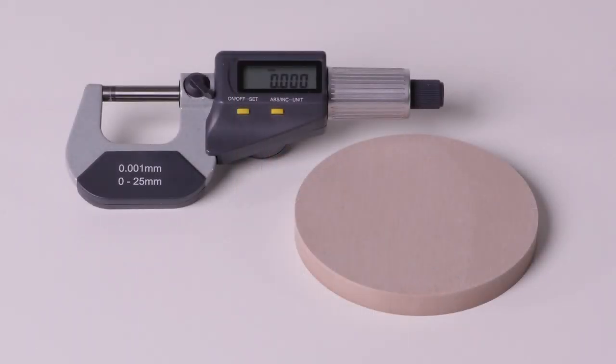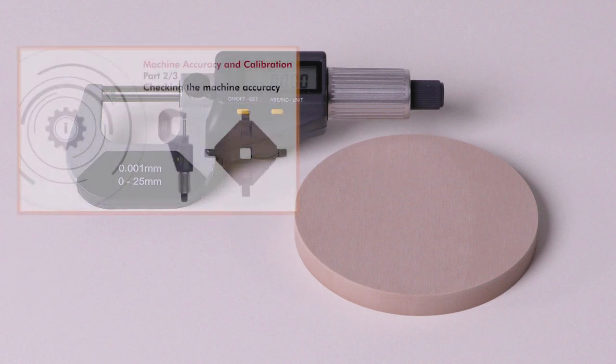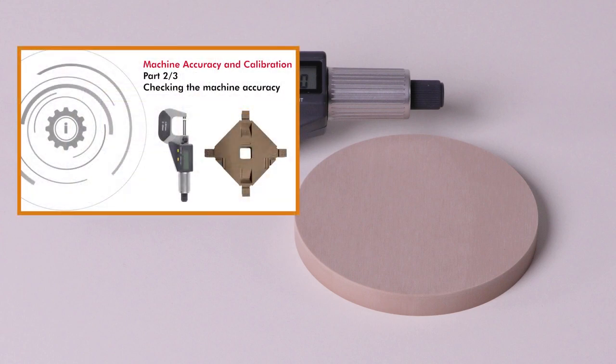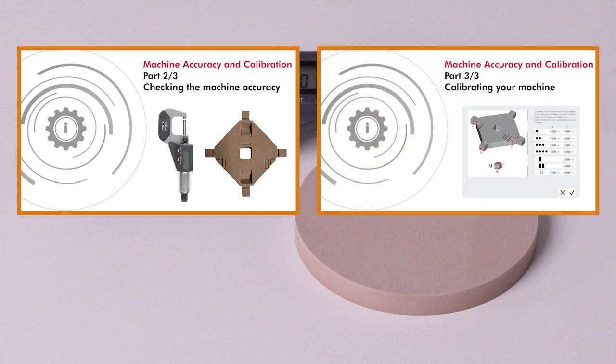As you have seen in this video, it is really important to learn how to use the micrometer correctly before measuring calibration or test specimens. If your measured values are imprecise, your calibration will fail. Incorrect usage of micrometers is a common reason for machine downtime. We provide two separate videos to show you how to check the accuracy of your machine and how to recalibrate your machine if necessary.